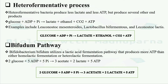The bifidum pathway is specifically seen in Bifidobacterium bifidum. This bacteria utilizes a lactic acid fermentation pathway to produce more ATP than either homo-lactic or hetero-lactic fermentation. The reaction is: two molecules of glucose plus five ADP plus five inorganic phosphates yield three molecules of acetate, two molecules of lactate, and five ATP. Compared to two ATP in homofermentative and one ATP in heterofermentative, the bifidum pathway yields the maximum ATP.